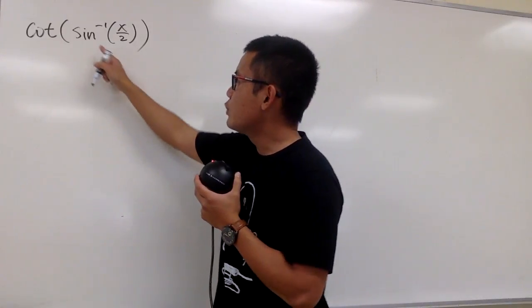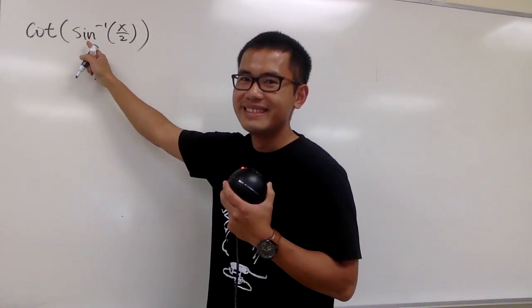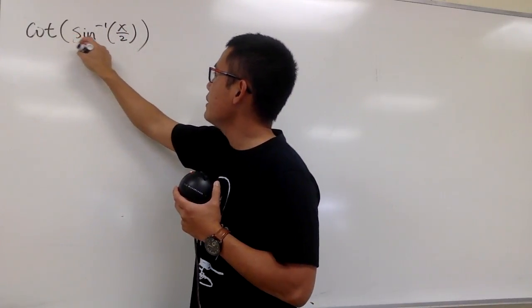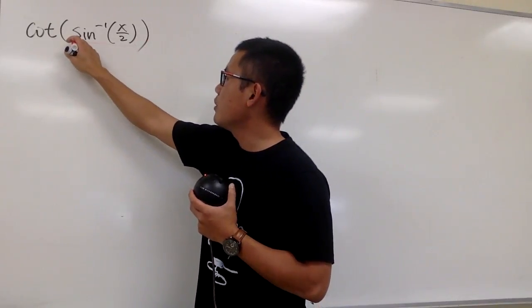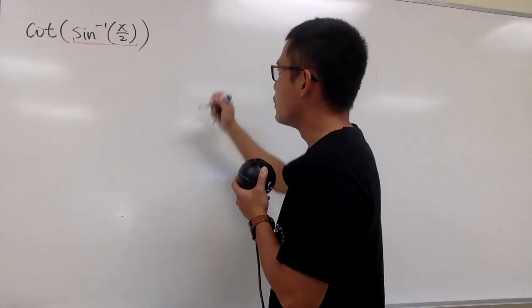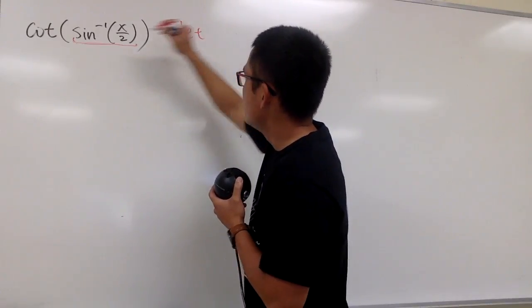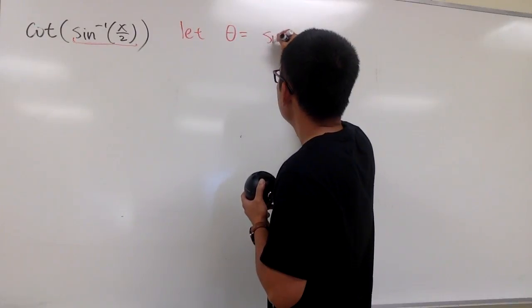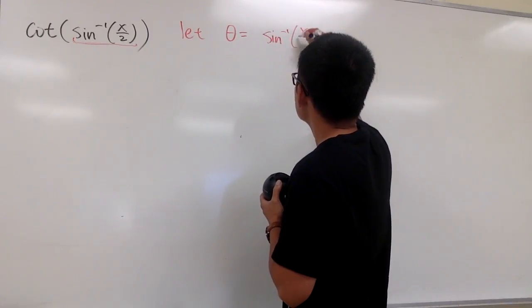Remember, whenever we have an inverse trig function, they all represent an angle. So right here, this represents an angle, and I will just make this super clear for you guys. To start with, we can say that this angle is θ, so θ equals to that - inverse sine of x over 2.